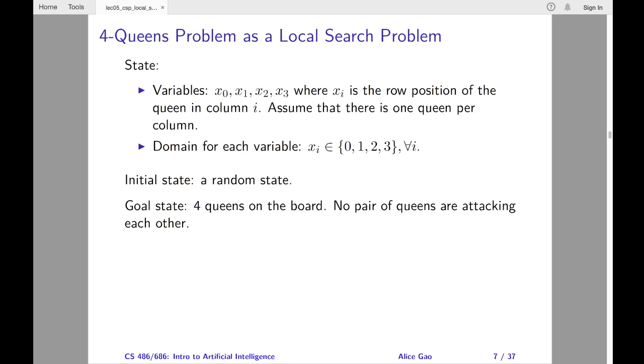For the goal state, we have four queens on the board, and they satisfy all the constraints, which means that no pair of queens are attacking each other. By now, you might have realized why I did not define the constraints in the state. Our goal is to find a state that satisfies all the constraints.